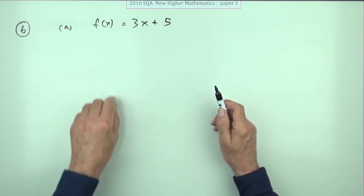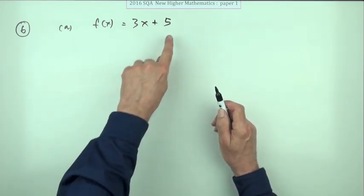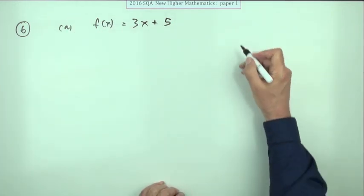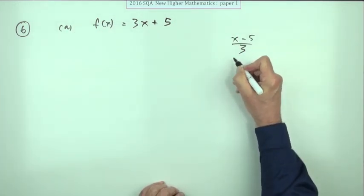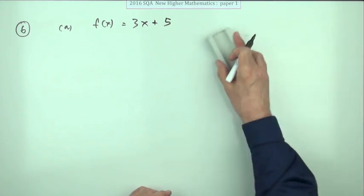It's actually quite easy just to see the inverse straight away - it's going to be take away five, divide by three. That's the answer, but for three marks I don't suppose you could just pop that down.